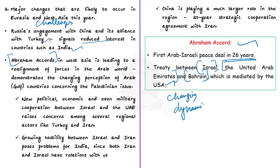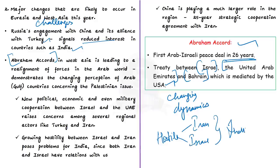The new political, economic and military cooperation between Israel and the UAE raises concern among several regional actors including Turkey. The landmark deal between Israel and the UAE was harshly criticized by Turkey. Also, Iran fiercely opposed the US-Israel relationship and the US recognition of Israel's existence. All these show growing hostility between Israel and Iran. The author feels this is a serious problem for India as both Iran and Israel have cordial relations with us. And here too, China is playing a major role — it had signed a 25-year strategic cooperation agreement with Iran.